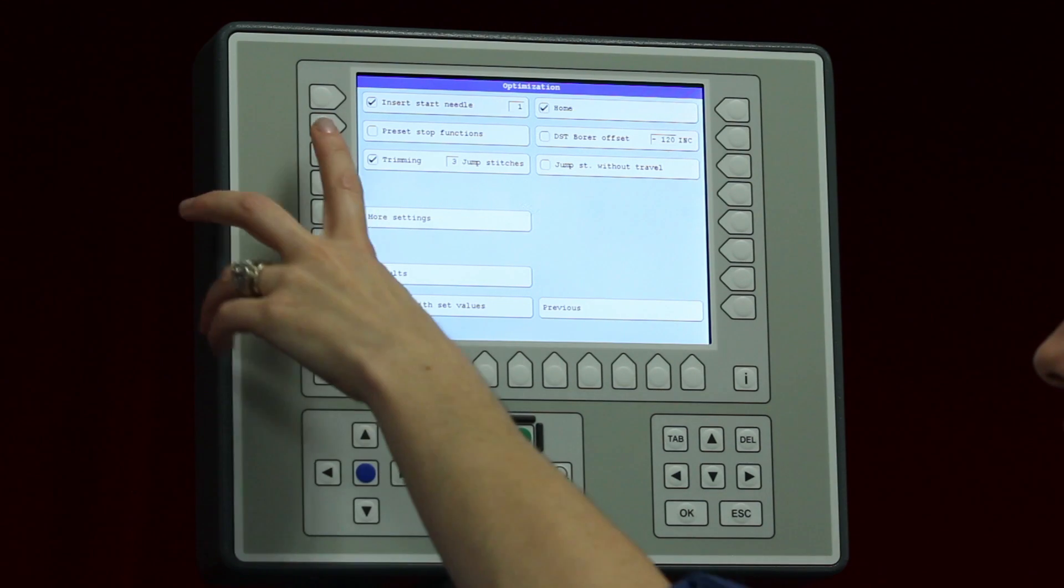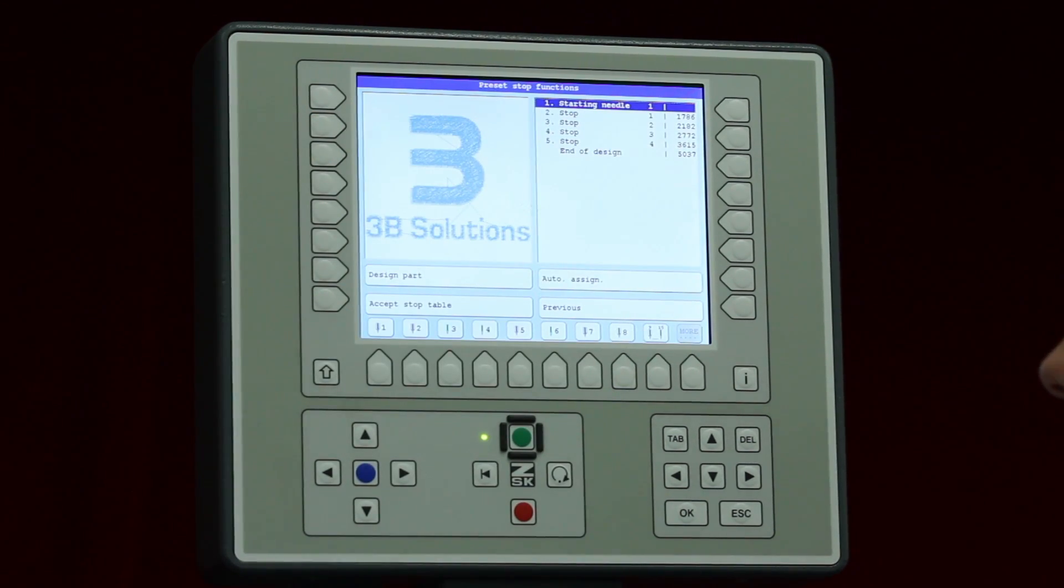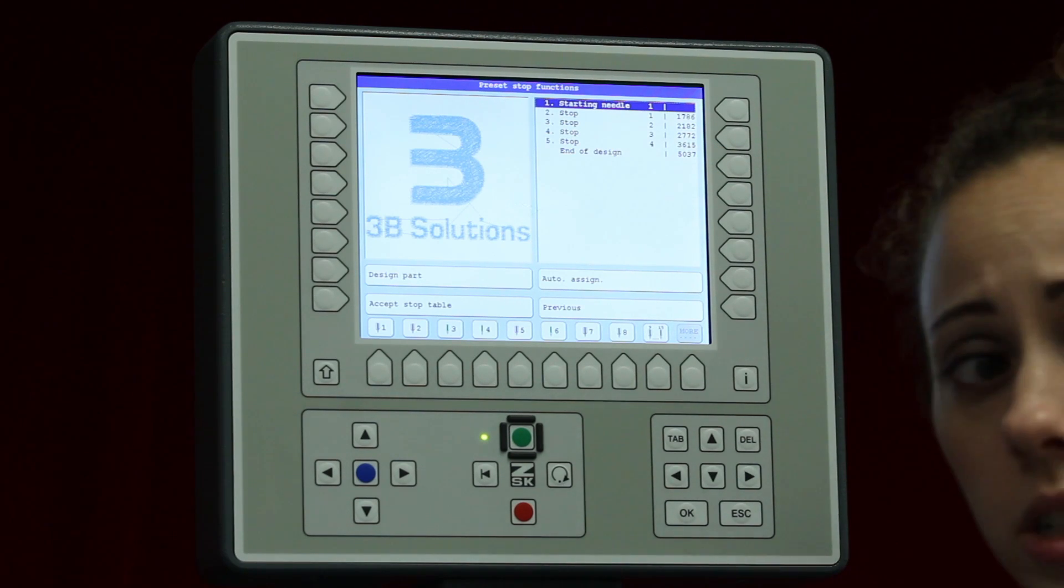And here I will hit preset stop functions. In the preset stop functions, I can see all the different stops I have or the color changes for the DST file.